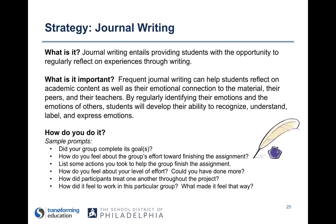Some sample prompts: How do you feel about the group's effort towards finishing the assignment? How did participants treat one another throughout the project? How did it feel to work in this particular group? When you do these prompts regularly, it forces students to take time to reflect on those experiences. A sample journal assignment includes having students record their reflections after each project or assignment for which they work in a group. Throughout the year, students maintain a journal that is frequently reviewed by the teacher, and these prompts elicit reflection to help students practice identifying and labeling emotions.